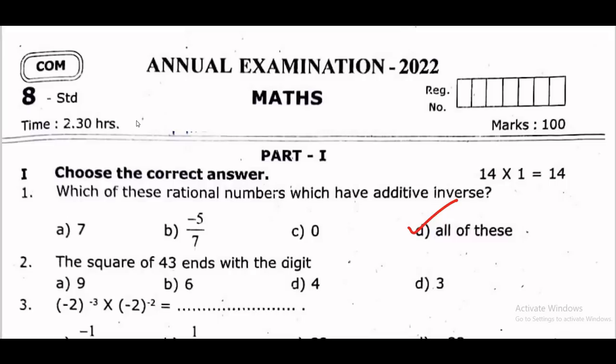The square of 43 ends with which digit? For 43 squared, you only need to consider 3 squared. 3 squared equals 9. So 43 squared ends with 9. Option A.